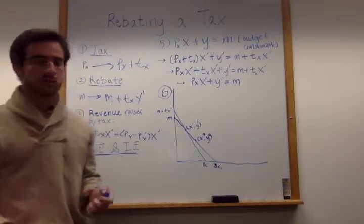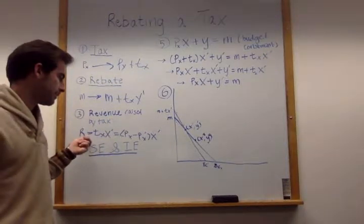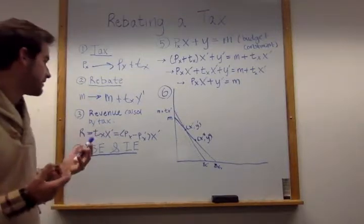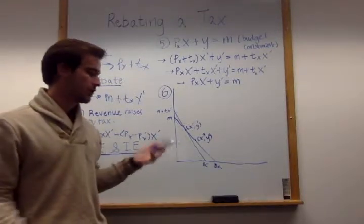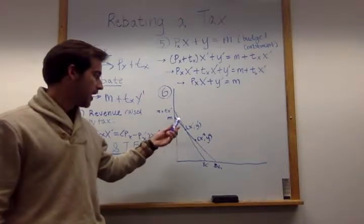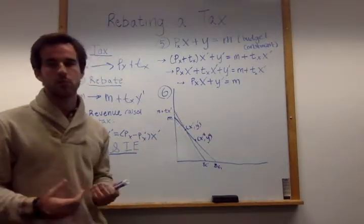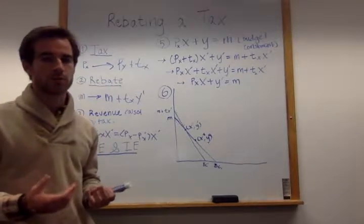One thing that we also have to mention is that the revenue here is the revenue of the government, so how much the government is collecting on this tax. We have to know that this is from the government's perspective, so M is actually equal to the income of all consumers that are going to be buying good X.